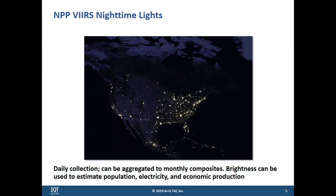The main case studies I'm going to be showing today use VIIRS nighttime lights data — specifically the day-night band. The sensor collects on a daily cadence, and I'm going to be showcasing some of the monthly composite data. Every single observation in a month is aggregated together, and that can be used to show trends over time and estimate changes in population, electricity, and economic production.